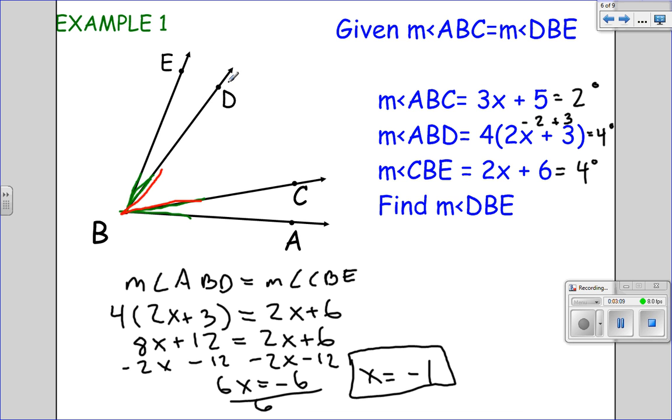So the measure of angle DBE, this little section here, will be the same as ABC, so it will be 2 degrees.